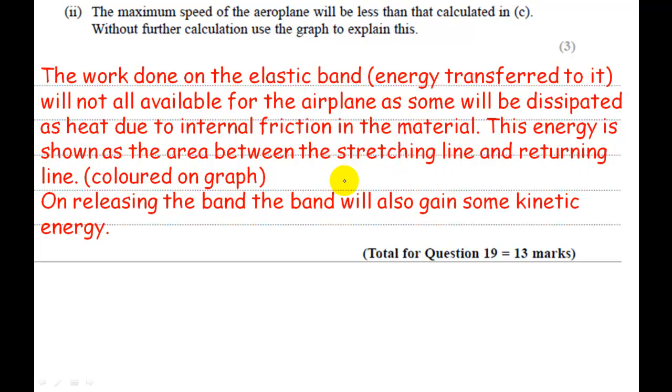So what we're going to say is the work done on the elastic band, or the energy transferred to it, will not be available for the airplane as some will be dissipated as heat due to internal friction in the material. This energy is shown as the area between the stretching line and the returning line, colored in on the graph. It's also true to say that some of that energy won't be available to the plane because the elastic band itself will have some follow through and it will gain some of the kinetic energy as well.